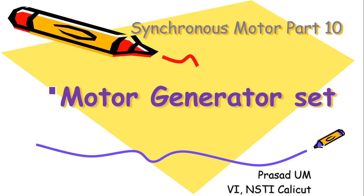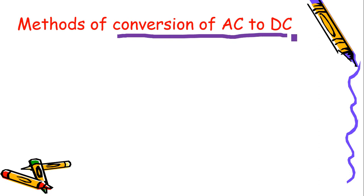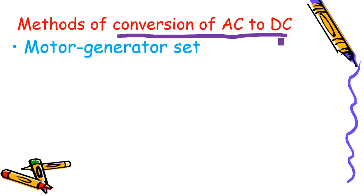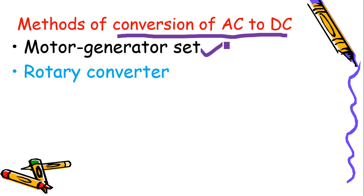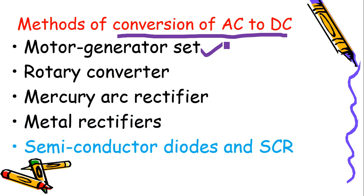Welcome to synchronous motor part 10. Today we will be seeing motor generator sets. The motor generator set is mainly used as a conversion method from AC to DC. There are different methods - the first is motor generator set, which we will be discussing today. Other methods are rotary converter, mercury arc rectifier, metal rectifiers, and semiconductor diodes and SCR.